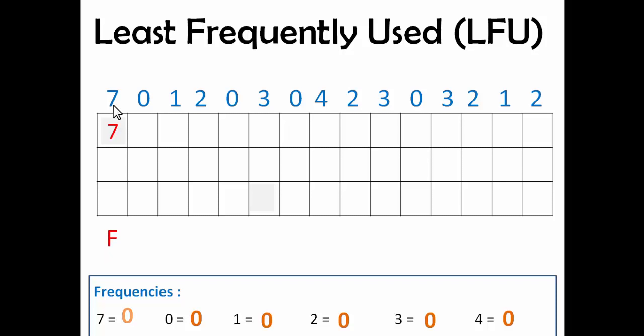The frequency of 7 will increase by 1, so it will become 1. The next page is 0 — 7 will remain there and 0 will get added. Again there will be a page fault because it wasn't present in the page frame buffer, and 0's frequency will increase. The next page is 1 — there is one more space left, so 7 and 0 will remain there and 1 will get added. There will be a page fault and 1's frequency will increase by 1.